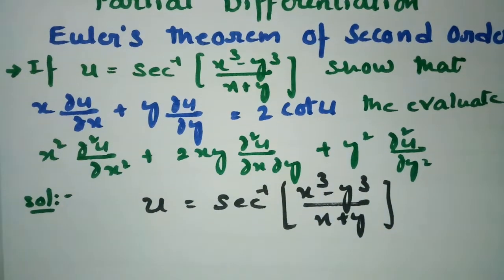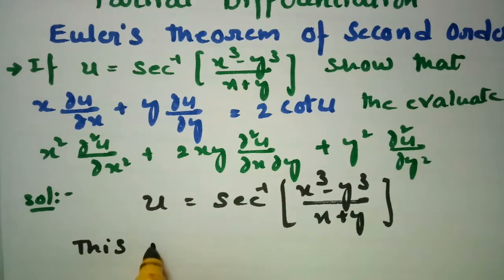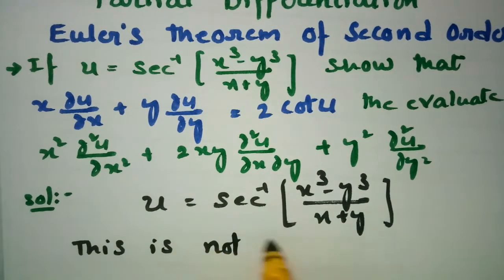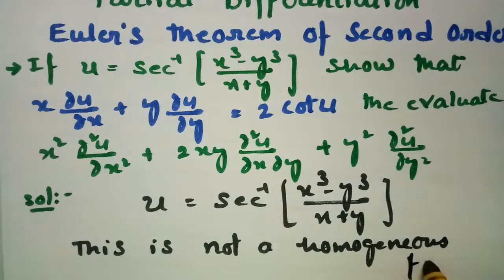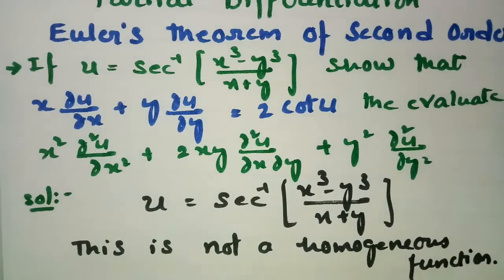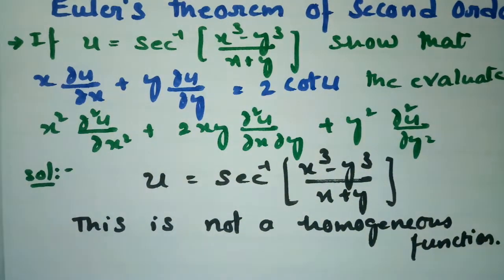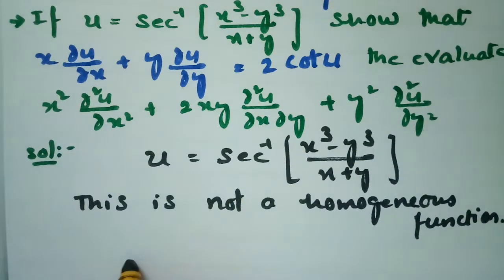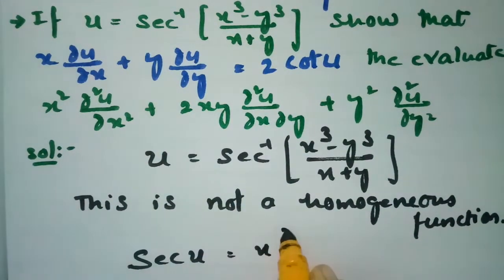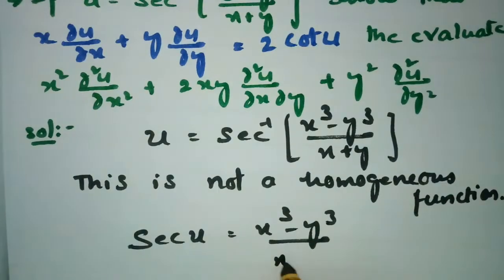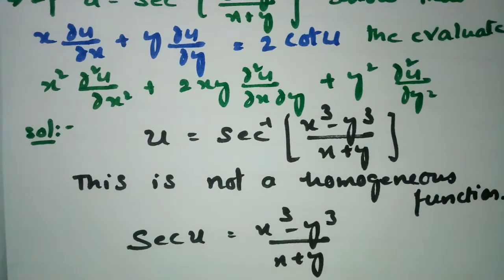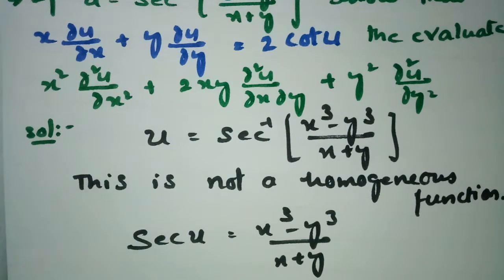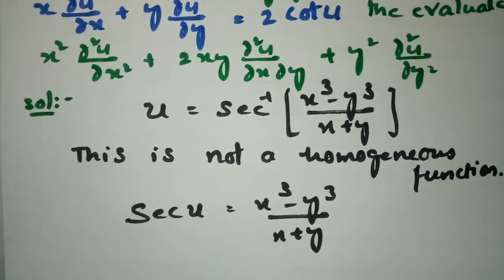If you observe this, it is not a homogeneous function. Since it is not a homogeneous function, we can rewrite it. Sending secant inverse to the other side, secant u is equal to x cube minus y cube by x plus y, which is of degree 2. So z is a homogeneous function of x and y of degree 2.